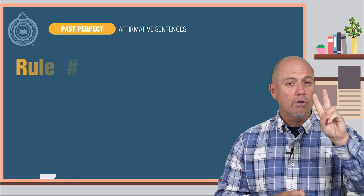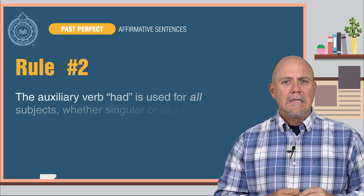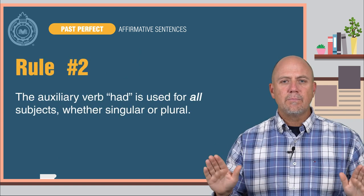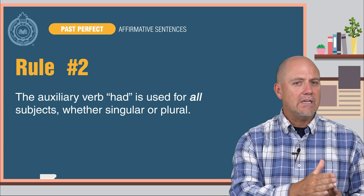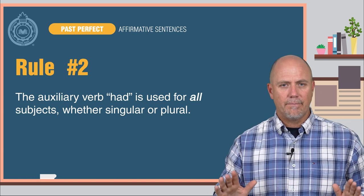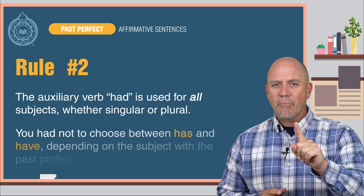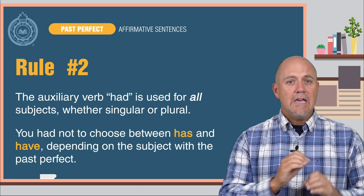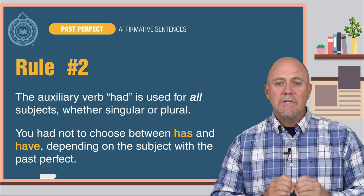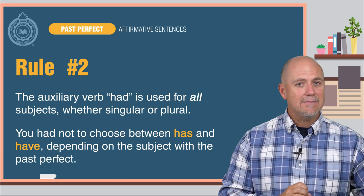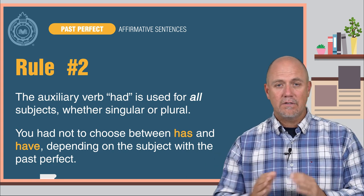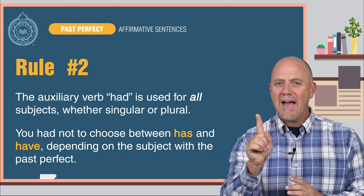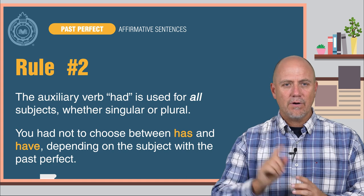Rule number two: the auxiliary verb had is used for all subjects, whether singular or plural. Remember the present perfect tense from level three? You had to choose between has and have depending on the subject — not with the past perfect.